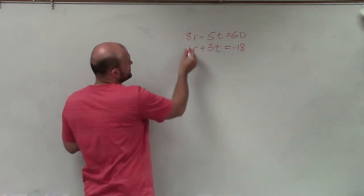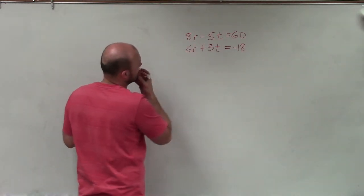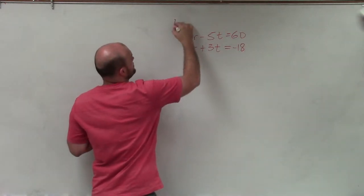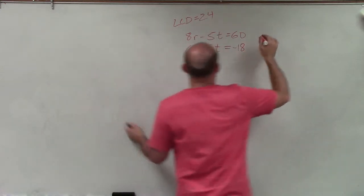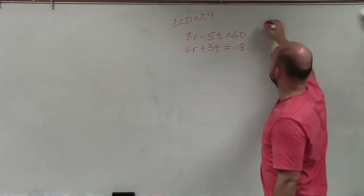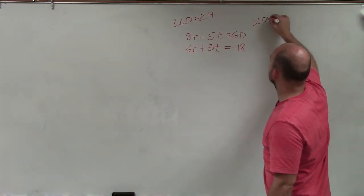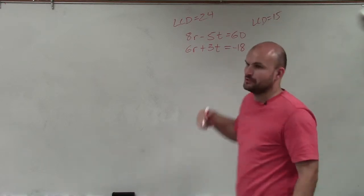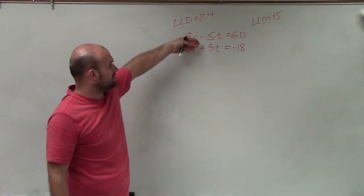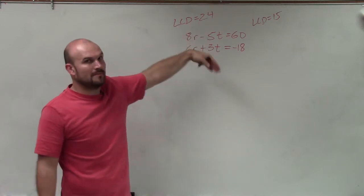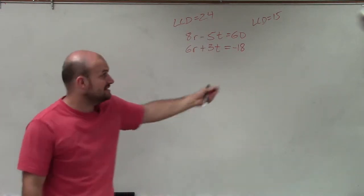So the LCD between 8 and 6, let's see, we got 16, would be 24. So I could say LCD is equal to 24. Or I could determine what is the LCD of 5 and 3, which would be 15. And I usually like to determine what is the smallest LCD to be able to get. Either way, we're still going to have to multiply the top and the bottom equation by its own multiplier to obtain our LCDs.